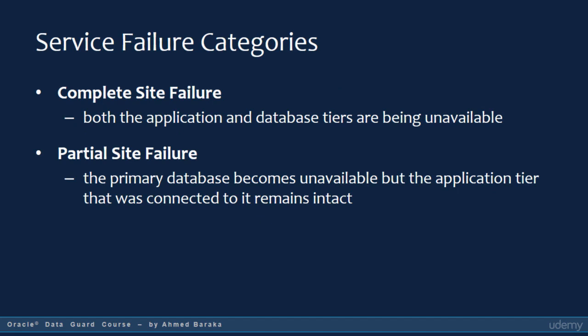Failure that could happen to systems can be divided into two categories: complete site failure and partial site failure. The complete site failure is when the whole service site becomes unavailable — this could be as a result of a disaster or even a long-term connection issue, making both the primary application and database systems unavailable. The second category, partial site failure, is when the primary database becomes unavailable but the application servers are still in operation. I will talk in more detail about those categories in the next slide.